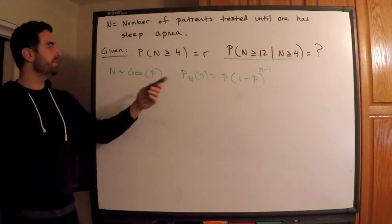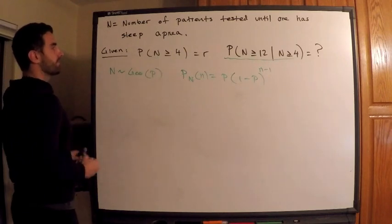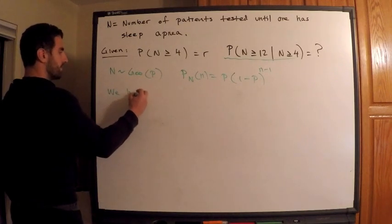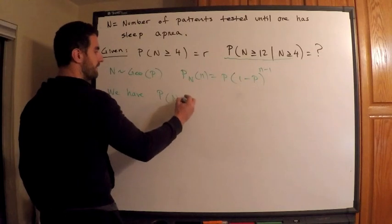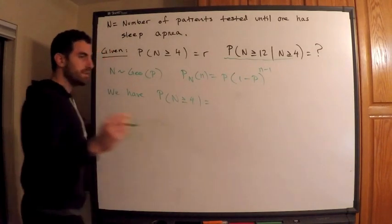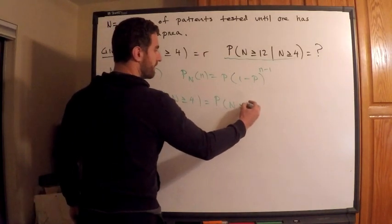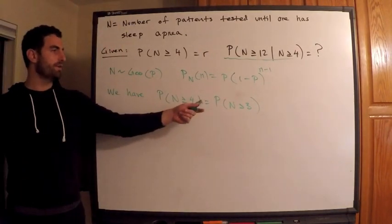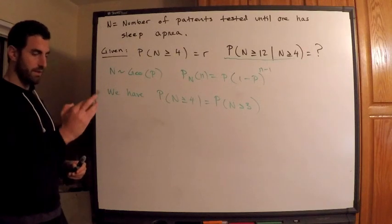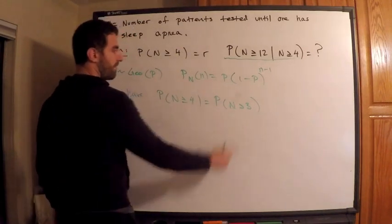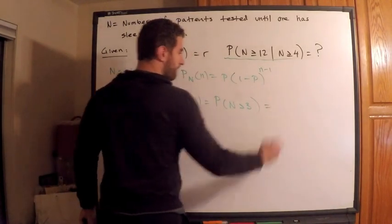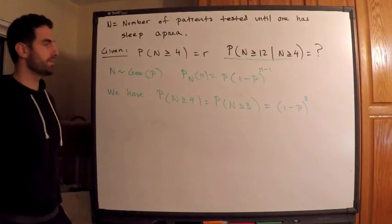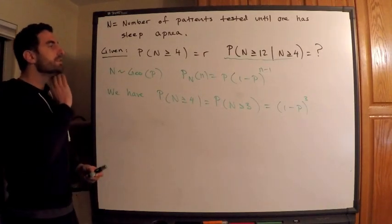Alright, so what does this give us right here? This is related to the survival function for the geometric random variable. So since we have this, we know we have that the probability that N is greater than or equal to 4, this is really the same thing as saying what's the probability that N is strictly greater than 3. Why am I writing it this way? Because this looks like the survival function. And in the last video, well in the previous video, I wrote down a representation for this. Probability N is greater than 3, this is equal to, this is equal to (1 minus p) cubed.